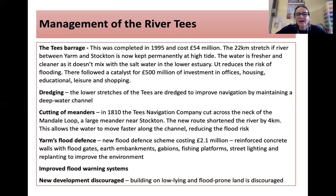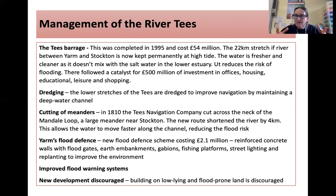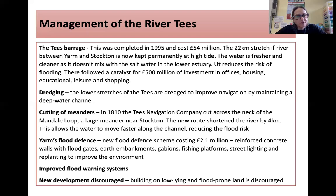They also cut off meanders. In 1810, the Tees Navigation Company cut across the neck of the Mandale Route Loop, a large meander near Stockton-on-Tees. The new route shortened the river by four kilometres, allowing water to move faster along the channel, reducing flood risk and getting water out to sea more quickly. Yarm's new flood defence scheme cost £2.1 million. It has reinforced concrete walls with floodgates, earthen embankments, and gabions — cages with pebbles inside to stabilise the riverbank. There are also fishing platforms, street lighting, and replanting to improve the environment. Improved flood warning systems have been installed, and new development on low-lying flood-prone land is completely discouraged.